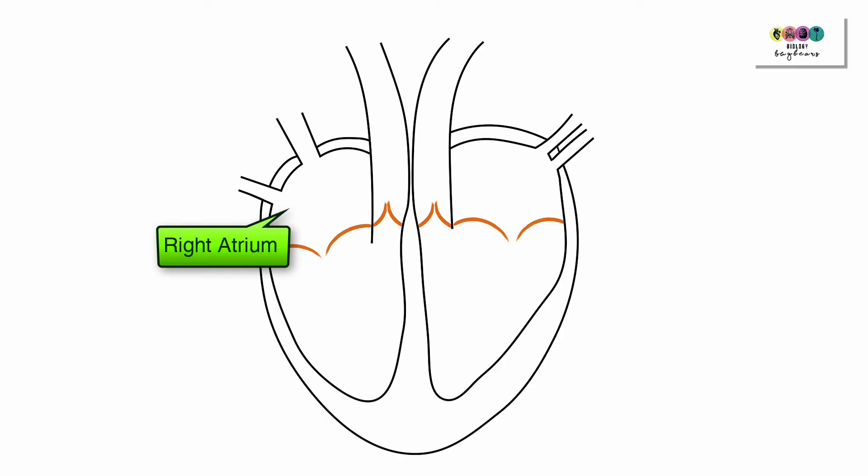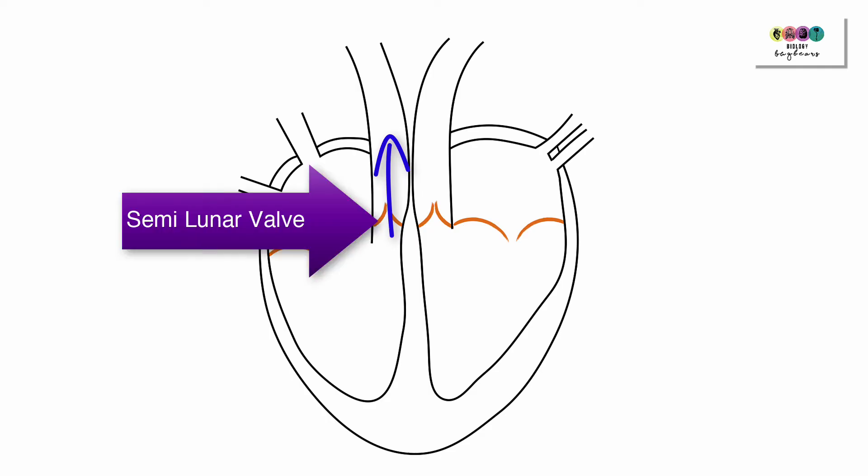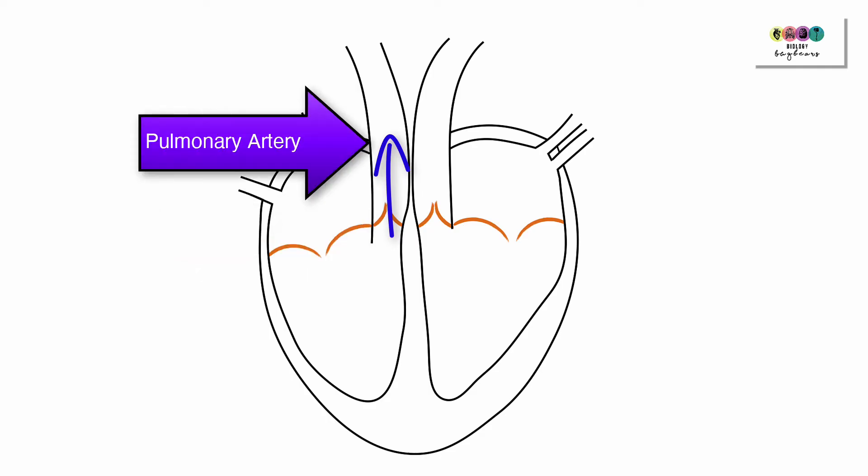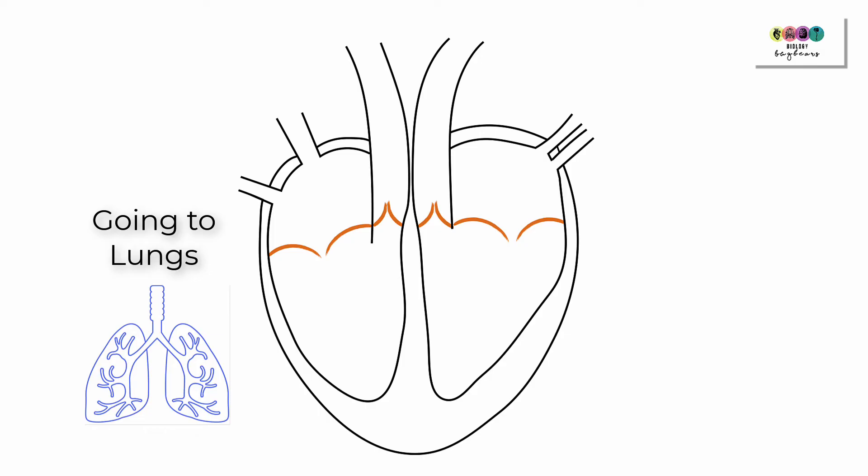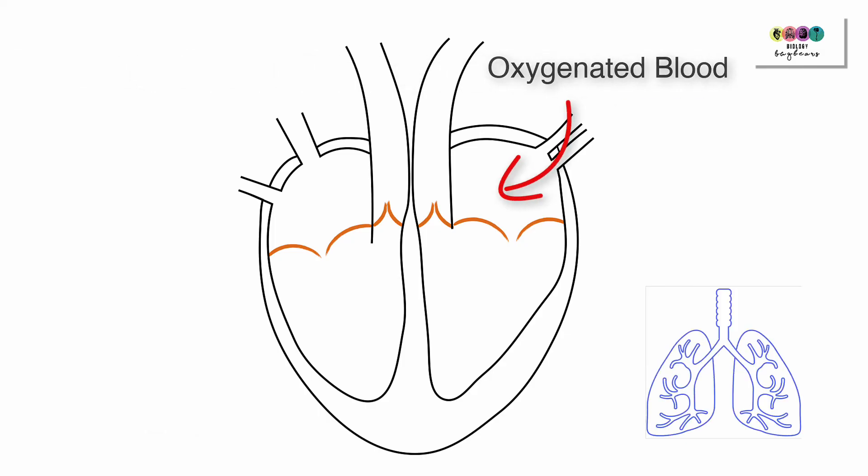Deoxygenated blood entered the right atrium and passes through the tricuspid valve into the right ventricle. It then exits the heart through the pulmonary artery and it's on its way to the lungs to receive oxygen. The blood, now rich in oxygen, will enter the left atrium and the cycle starts again.